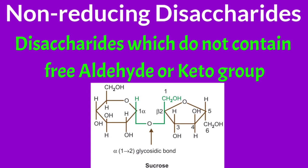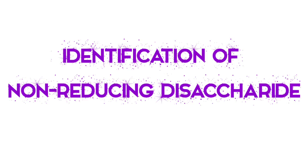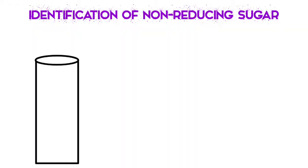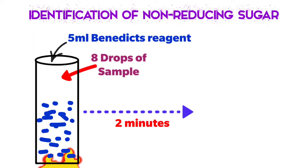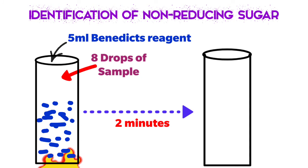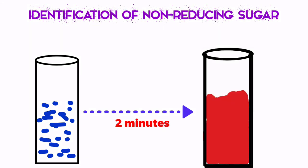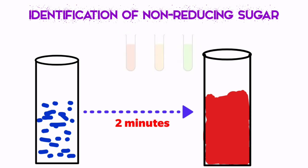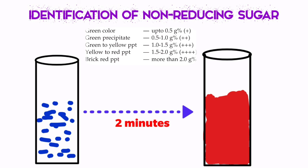Any sugar with no free functional group is called a non-reducing sugar. A simple test used to determine whether a given sample is a reducing or non-reducing sugar is the Benedict test. The procedure involves taking 5 ml of Benedict reagent, adding 8 drops of the sample, and boiling the contents for two minutes. Based on the color that develops, we can determine the sugar type. The appearance of different colors — green, yellow, orange, or brick red — depends on the concentration of sugar, making this a semi-quantitative test.